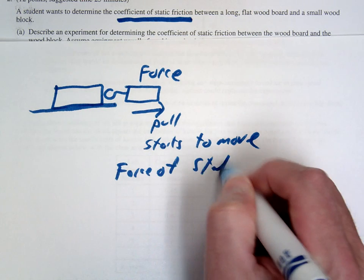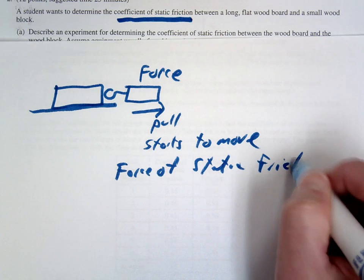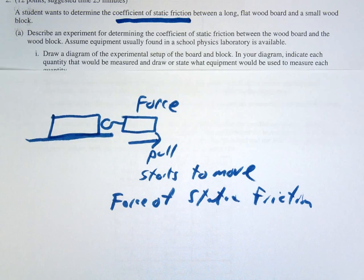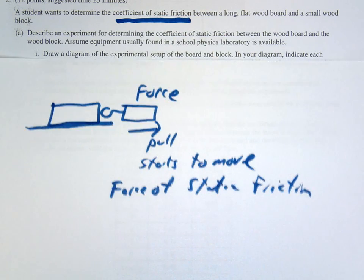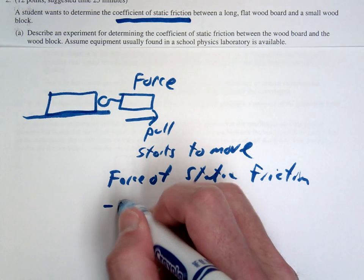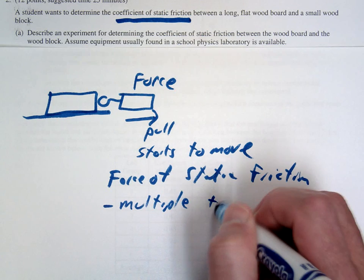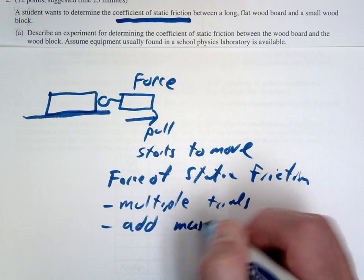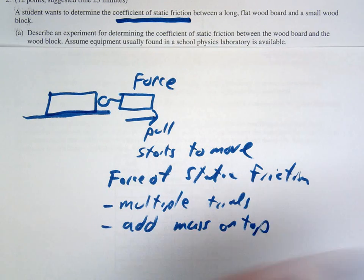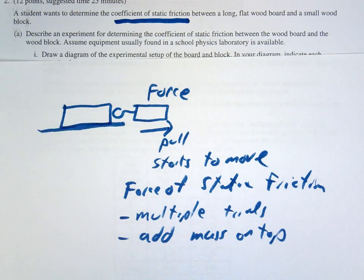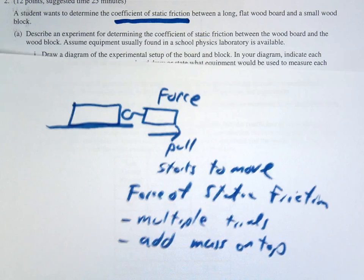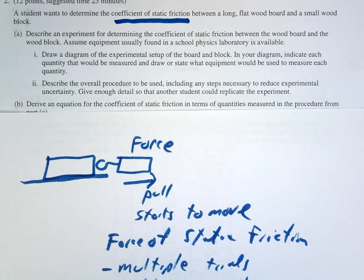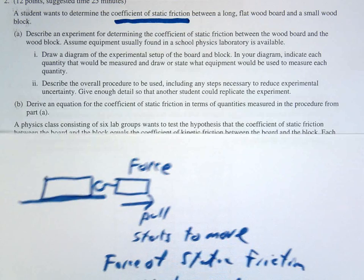Okay so that would be the procedure I would do. Let's see, they ask you to draw a picture and explain. I would make sure that you talk about doing multiple trials. Specifically I would probably say you're going to add mass on top and test it multiple times multiple ways so you get a lot of good data. I'm not going to do all the detail. Hopefully you got most of that.